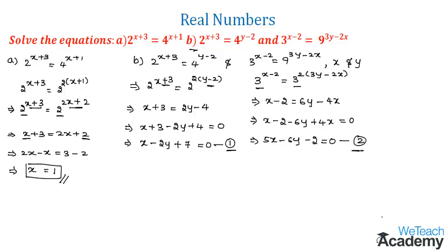Now let us solve these two equations to find x and y. The coefficients of y are not equal, so we multiply Equation 1 by 3 to make the coefficient of y equal to 6, matching Equation 2. This gives 3x - 6y + 21 = 0. Let us call this Equation 3.